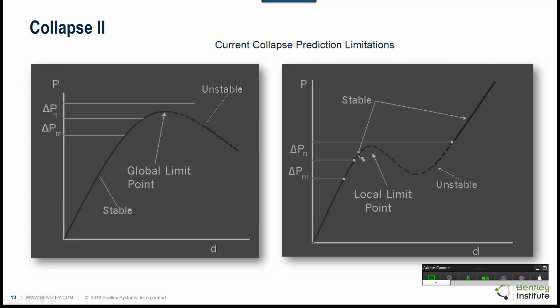For this behavior shown on the right hand side, this is typical of snap buckling. Once the program reaches a local limit point, it will then jump to the next stable configuration and then continue loading again. The old collapse does not predict the unstable portion of the curve in either case.